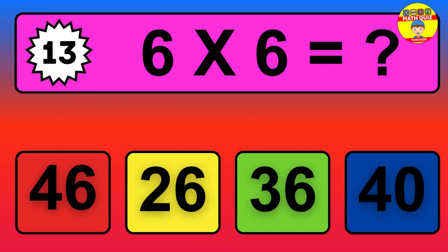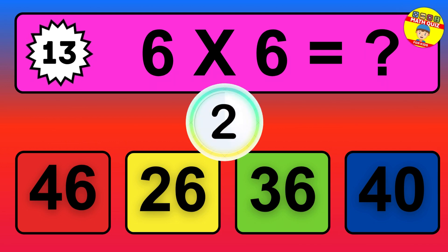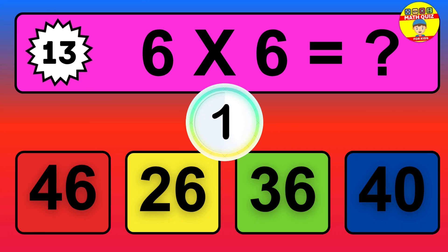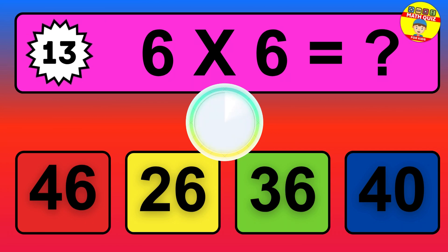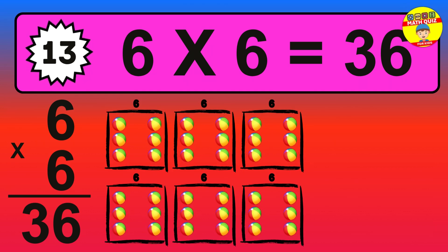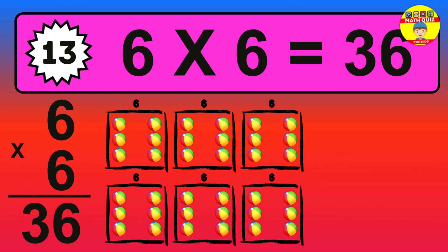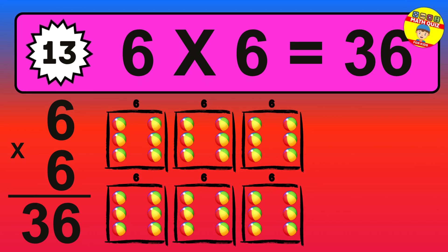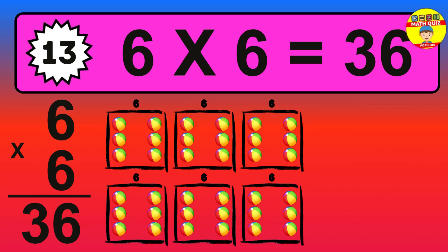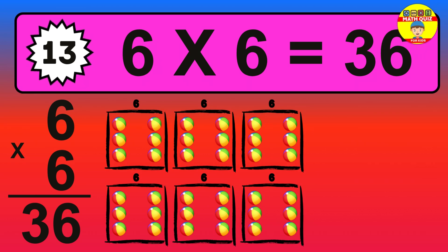Question thirteen: six times six equals what? The answer is six times six is thirty-six. To calculate, we have six groups with six balls each one. So how many balls do we have? Thirty-six balls.